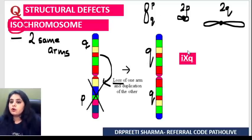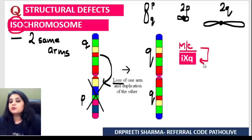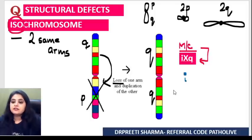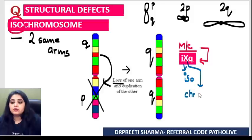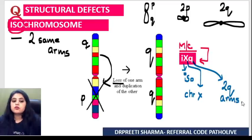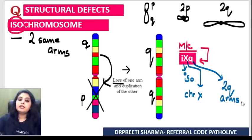Which is the most common isochromosome? The most common isochromosome is iXQ. I stands for isochromosome, X stands for chromosome X, and Q means it has two Q arms. That's the most common isochromosome we have.